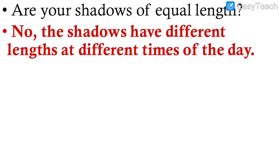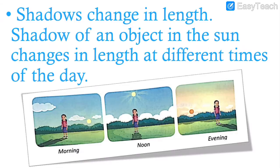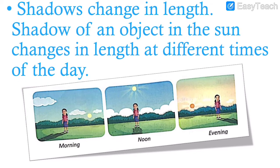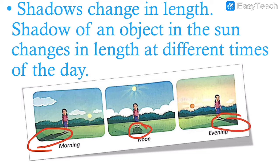So what is the pattern? Shadows change in length. The shadow of an object in the sun changes in length at different times of the day — morning, noon, and evening. In the morning the shadow is long, in the afternoon it is very small, and in the evening the shadow is long again. These are the three different lengths of shadows.